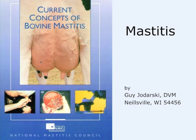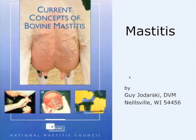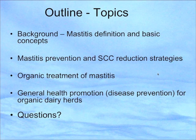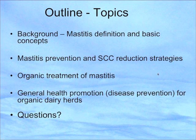This is a book put out by the National Mastitis Council, a group of academic and industry folks that work on mastitis problems and meet every year. We'll cover mastitis definition, mastitis prevention, somatic cell count reduction, how we handle those problems on organic dairies, organic treatments of mastitis, and finish with a comment or two about general health promotion, which is really the organic approach.